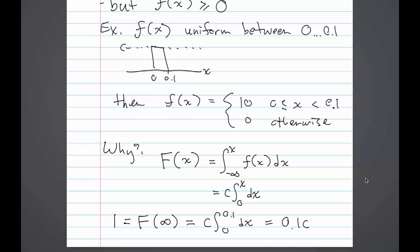Now we know that from above, big F of infinity has to equal 1. So the integral from minus infinity to infinity equals 1. But since little f of x is 0 after 0.1, we can just take the integral from 0 to 0.1. That gives us 0.1c. And if we solve for c, c equals 10.